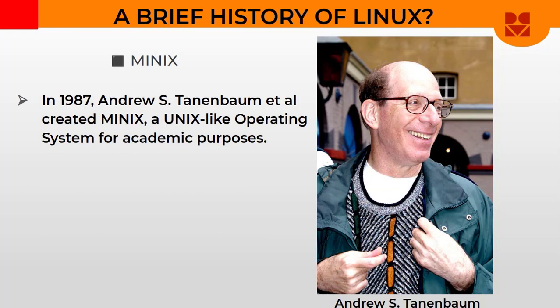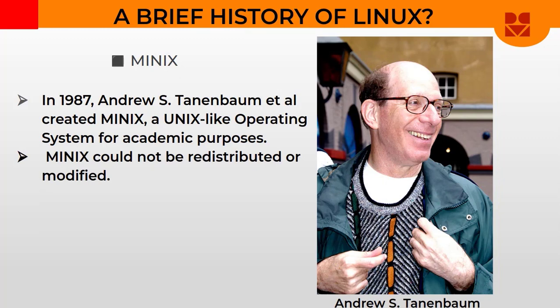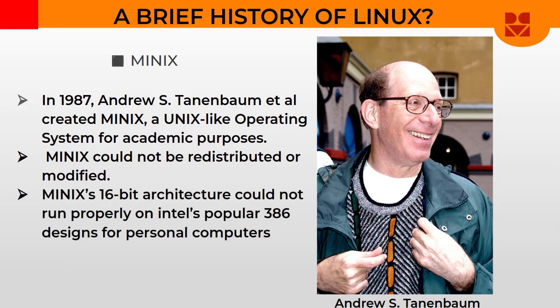Around that same time, in 1987, Andrew Tanenbaum and his colleagues created Minix — a Unix-like computing system for academic purposes. It was free to use, but only for academic purposes. The problem with Minix was that users could not redistribute or modify it, which means you could only use Minix as is. Also, Minix's 16-bit architecture could not run properly on Intel's popular 386 designs, which were made for personal computers.